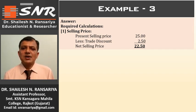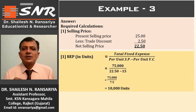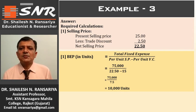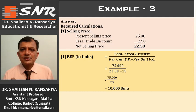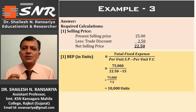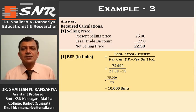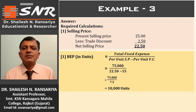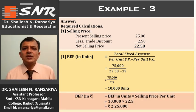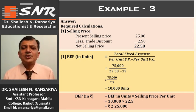We will give the answers one by one. First, breakeven point. We will calculate in units. The formula for BEP in units is equal to total fixed cost divided by S minus V. So, total fixed cost is Rs. 75,000, divided by 22.5 minus variable expense 15. We will get BEP 10,000 units. Here we consider net selling price, i.e., after trade discount. Now, we will calculate BEP in rupees: BEP in rupees is equal to 10,000 multiplied by 22.5, so BEP is Rs. 2,25,000.